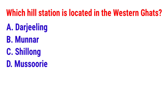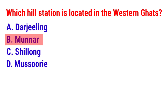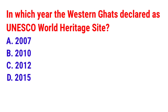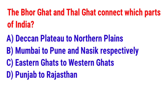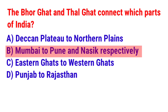Question 28: Which hill station is located in the Western Ghats? The answer is option B — Munnar. Question 29: In which year were the Western Ghats declared a UNESCO World Heritage Site? The answer is option C — 2012. Question 30: Which pass connects Kerala and Tamil Nadu through the Western Ghats? The answer is option B — Palghat Gap. Question 31: The Bhor Ghat and Thal Ghat connect which parts of India? The answer is option B — Mumbai to Pune and Nashik respectively.